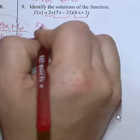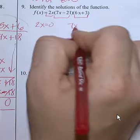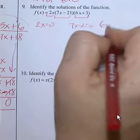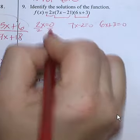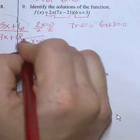So 2x equals zero, 7x minus 2 equals zero, and 6x plus 3 equals zero. Divide by 2, divided by 2, zero divided by any number is zero. There's one solution.